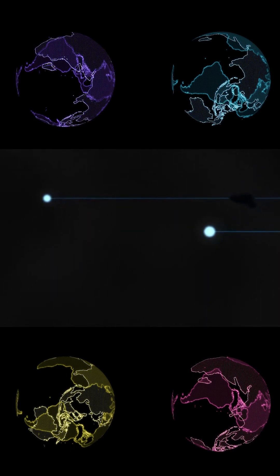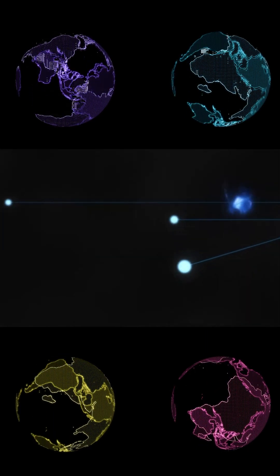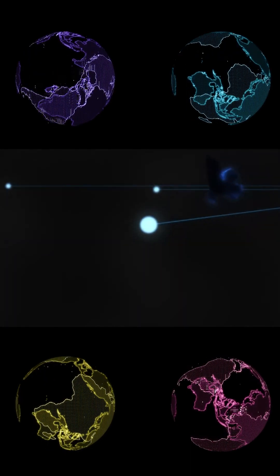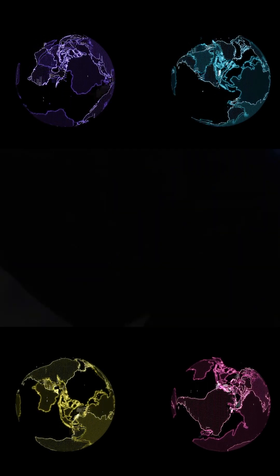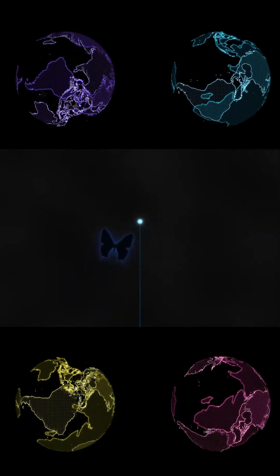Instead, the universe branches into different paths where every possible outcome is realized. Each branch represents a real universe, and all these universes collectively remain part of the universal wave function.